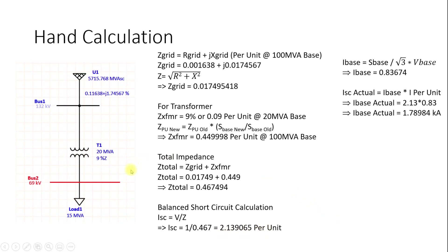To convert back to actual values, we calculate I_base = S_base / (√3 × V_base) = 100 MVA / (√3 × 69 kV) = 0.836 kA. The actual short circuit current is I_actual = I_base × I_pu = 0.836 × 2.13 = 1.789 kA, approximately 1.79 kA.